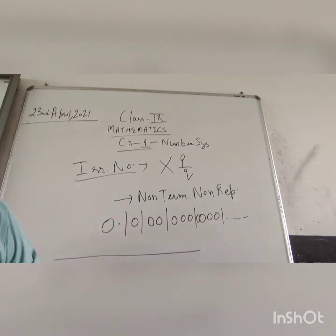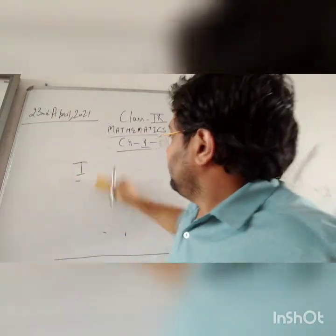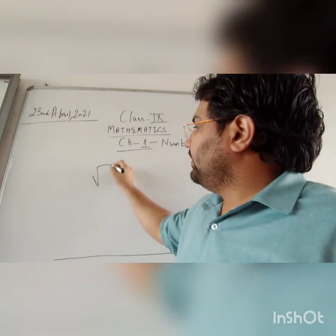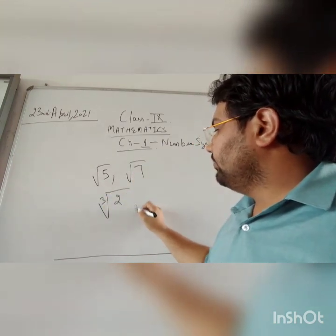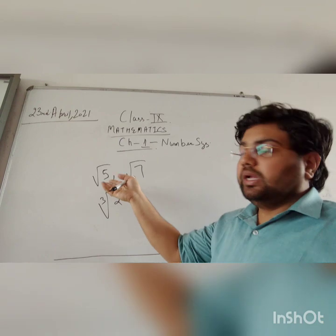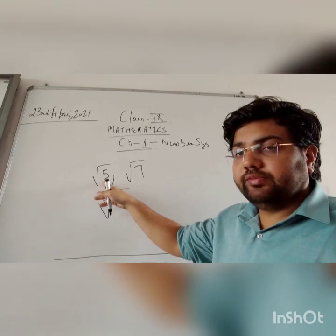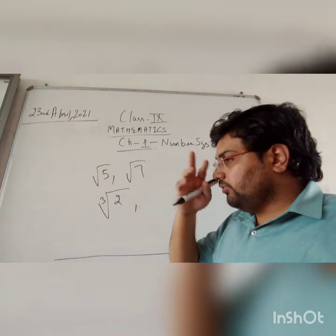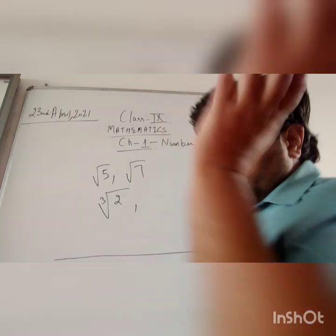Now we will do some questions on irrational numbers. Suppose, now other type of irrational number is, you can say, root 5, root 7, cube root of 2. All those root numbers of which their perfect roots cannot be found out. Like we don't know the perfect value of root 5. This will come in points. This is the irrational number. So if we solve root 5, this will be non-terminating, non-repeating in nature.